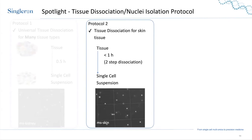We have also optimized protocols for specific tissue types — for example, skin tissue, brain tissue, liver, pancreas, and others. These protocols are free for download. Skin tissue is a little tricky to dissociate because it has different layers and is hard to dissect. We optimized our protocol based on the CellLife kit and developed a two-step dissociation process that achieves optimal single cell suspension within one hour, as shown in the microscopic image of singulated cell suspension.